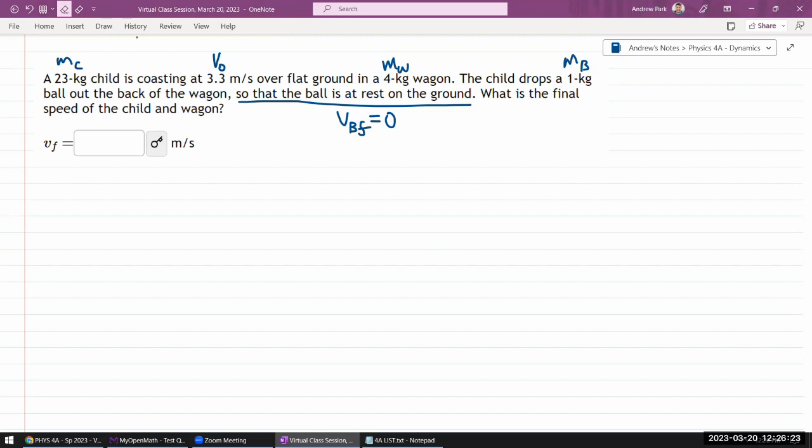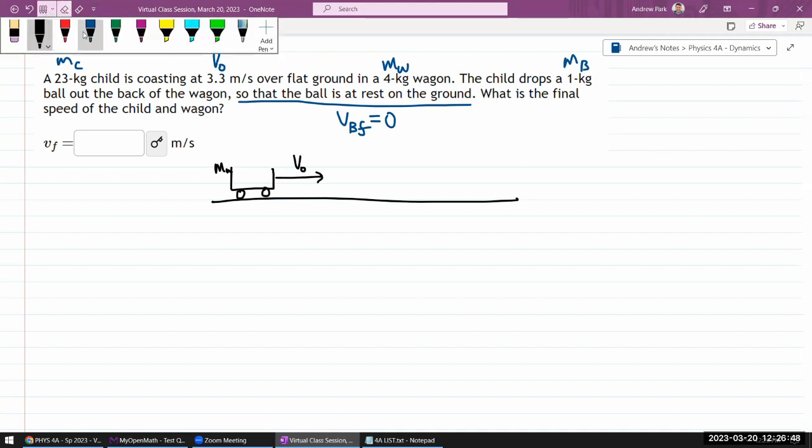Sorry, I thought this was going to be a trivially easy question, but it's not, which is fine. I don't like trivially easy questions. So I have to describe all the elements of the system that we have. We have the wagon, so let's call this mass of the wagon, which is traveling at some speed v-naught, and inside that wagon we have a child with the mass of the child, and we have a ball.